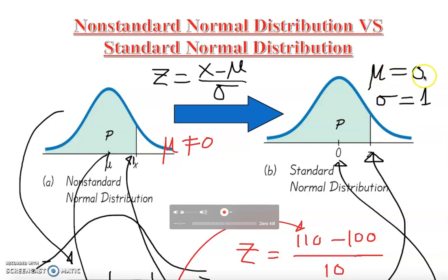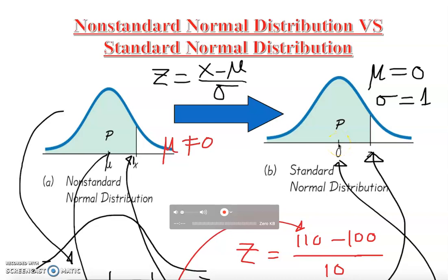For the standard normal curve: the population mean is zero and the population standard deviation is one. The total area under this normal curve is equal to one. The curve extends indefinitely in both directions, approaching but never touching the horizontal axis — and it stays positive.